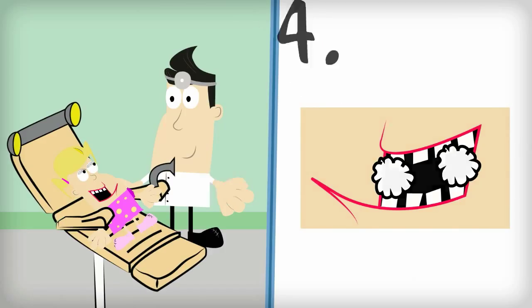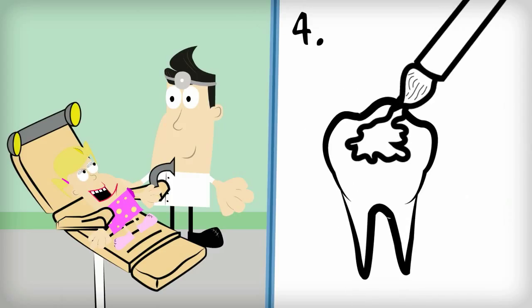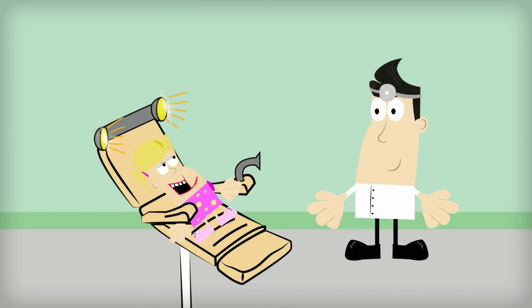And last of all he'll paint some super strong white polish like putting a roof on to keep the cavity monsters away for good. When he's done the dentist points a disco light at your teeth to help them dry and harden the sealant.